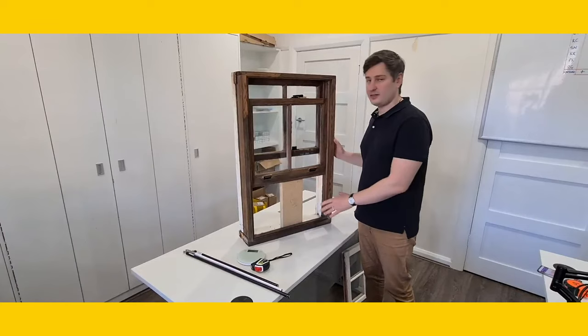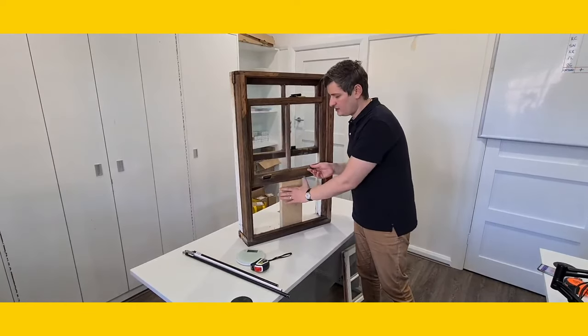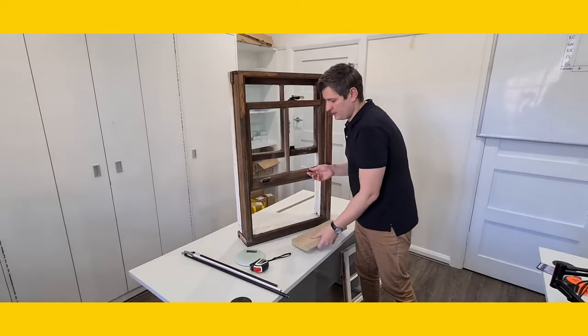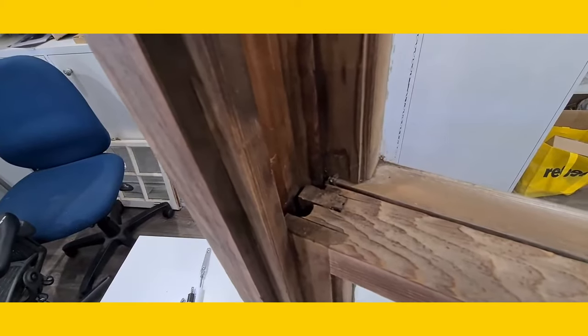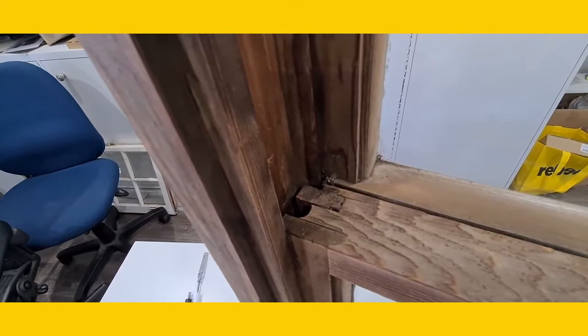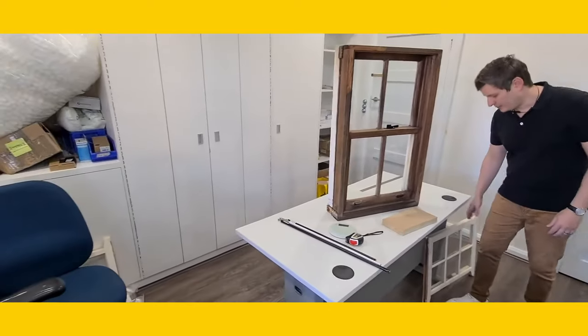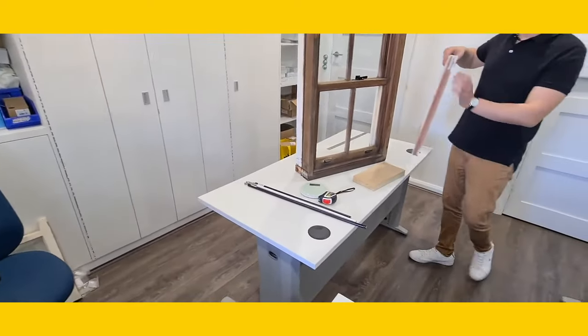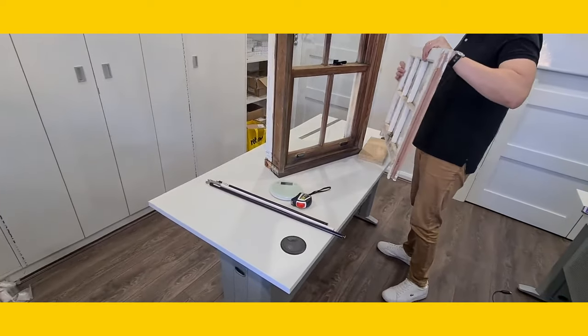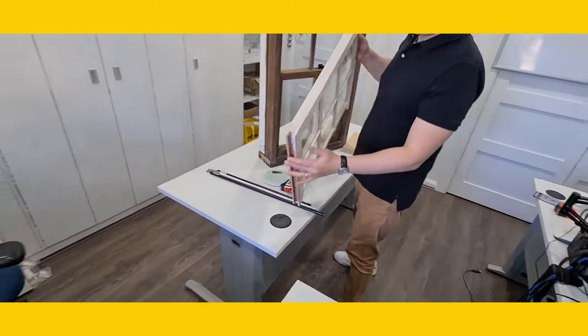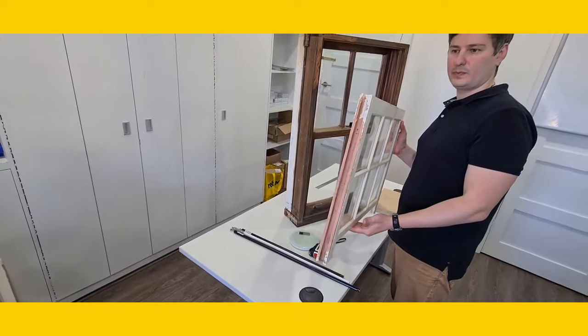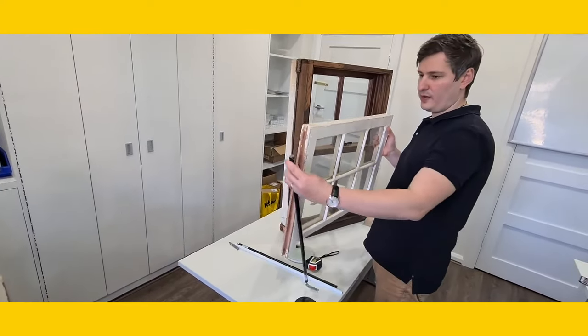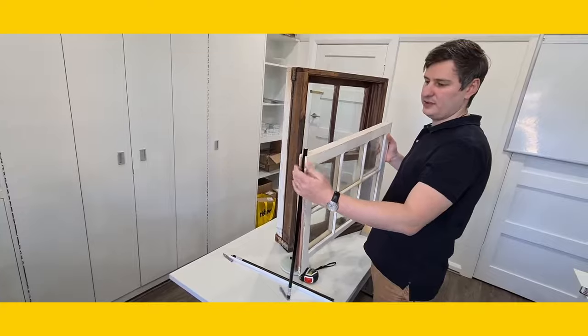The next thing to do is to measure the rebate of the window cutout, where the actual spiral balance will be sitting in. I've got this window here which makes it a lot easier to see. So that is a rebate, and that is where your spiral balance is housed into.